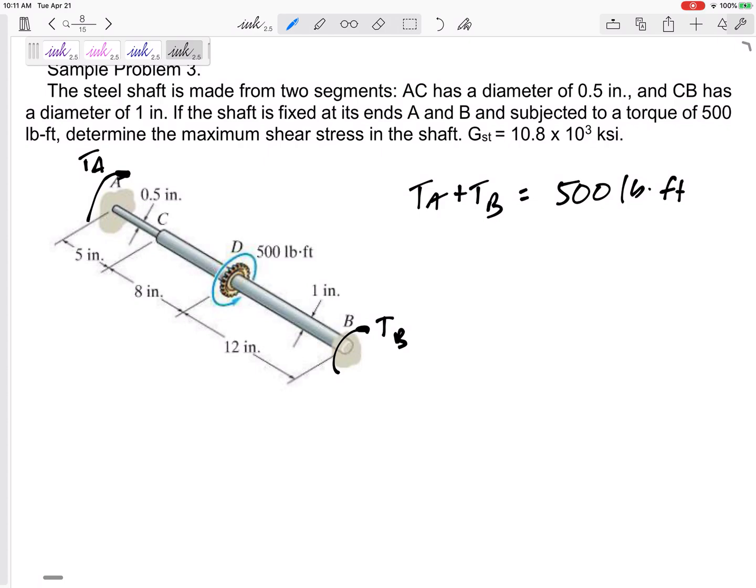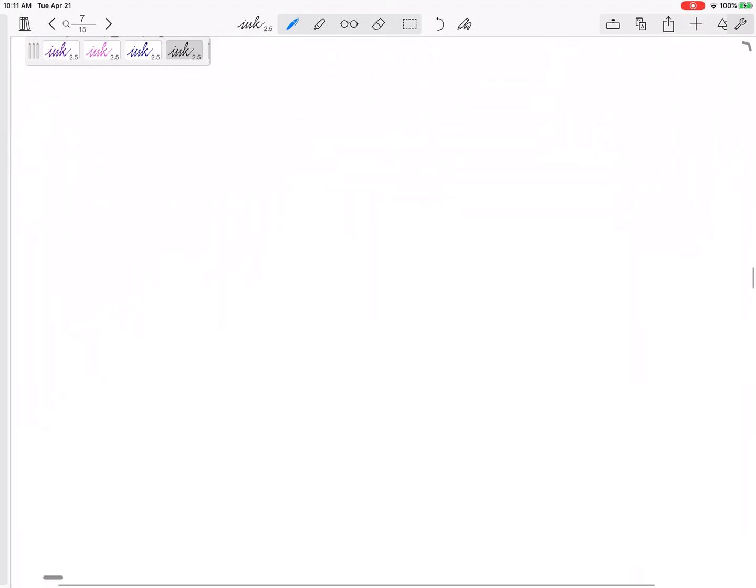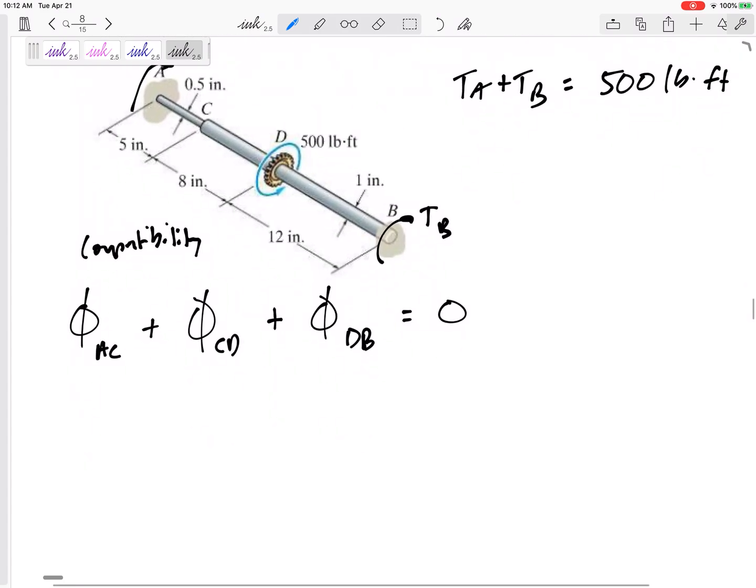What's my other equation? Compatibility. So for axial problems, my compatibility is something about the delta Ls, the stretch, the elongation, the change in length. For this one, my compatibility is something about the angle of twist. The angle of twist of section AC and section DB might add up to zero because it has to go back to where it was originally. Look at all the different compatibilities. It's not always going to add up to zero, but this one, this one it does.